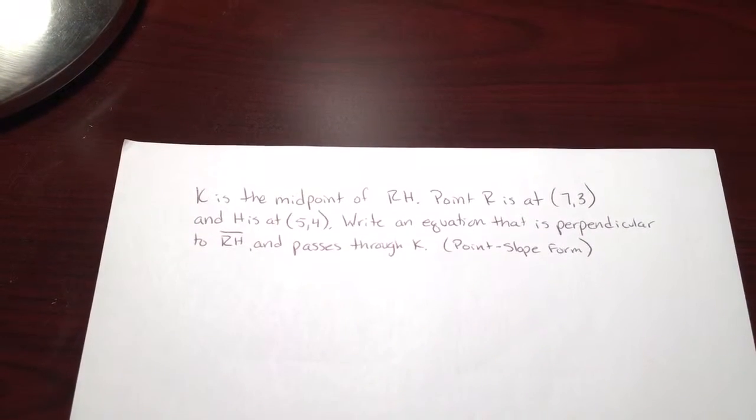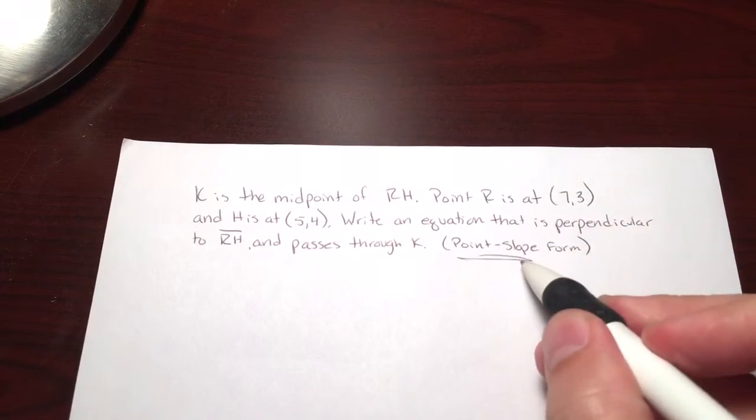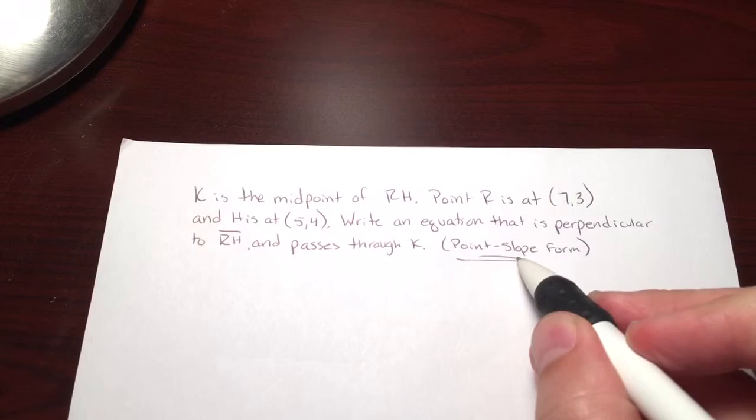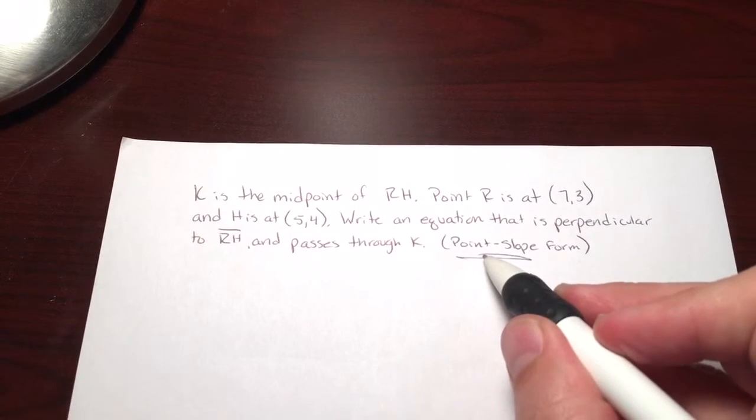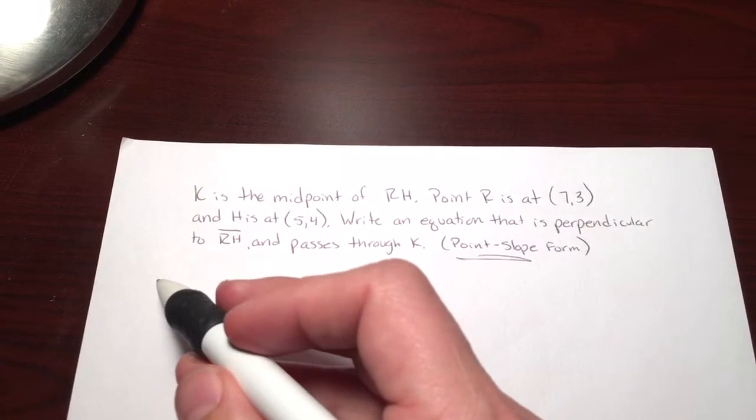I told you I wanted to put it in point-slope form. Well, the name of the form is telling you exactly what you're going to need to find. First the slope, and of course you've got to find the point that you're passing through. We know that it's going through K, but we don't know the coordinates of K.